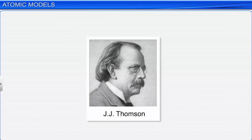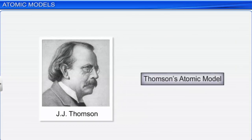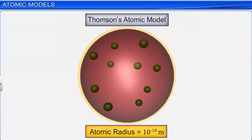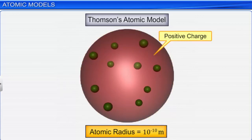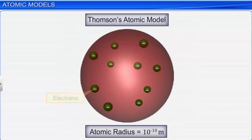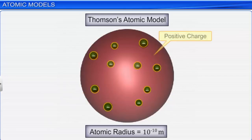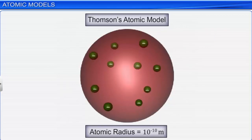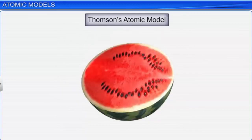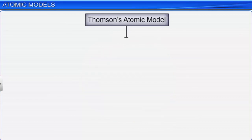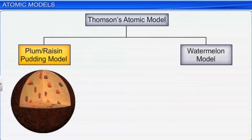J.J. Thomson in 1898 proposed the atomic model called Thomson's atomic model, soon after the discovery of electrons. According to this model, an atom is a sphere of radius 10⁻¹⁰ meter with uniform distribution of mass and positive charge, with negatively charged particles called electrons embedded in it. In this model, electrons embedded in evenly spread positive charge can be visualized as plums or raisins embedded in a pudding or watermelon. Therefore, this model is also called the plum pudding, raisin pudding, or watermelon model.